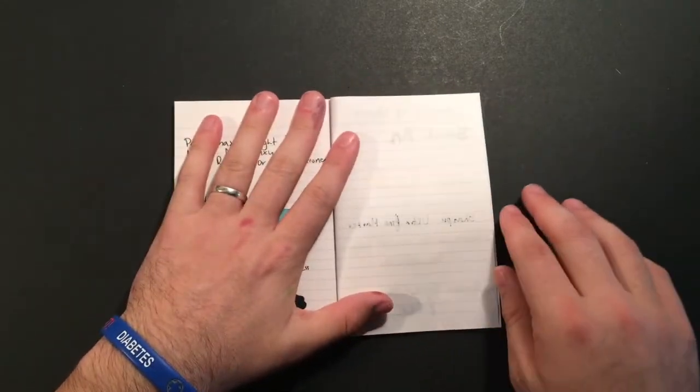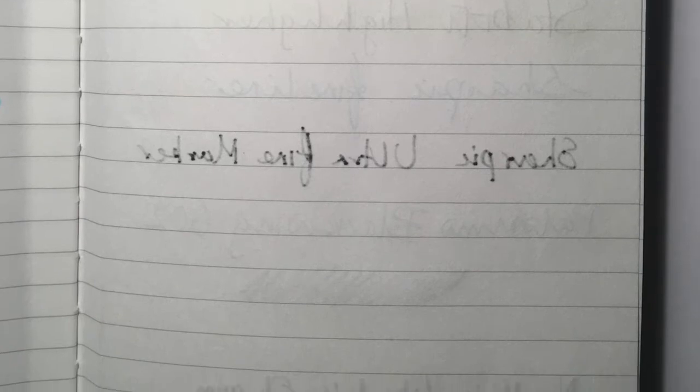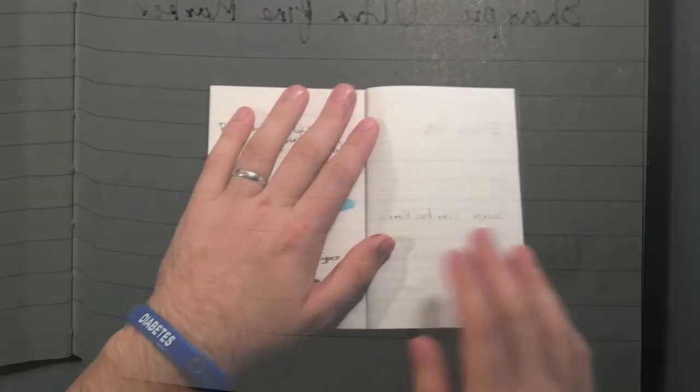As you can see on the back of that page, the only thing that really bled through was the brush pen and the Emerald of Chivor because they're quite big wet pens, and the Sharpie ultra fine marker came through. But virtually nothing from the flex, which is really good to see. So that's once again a really big tick for this paper.